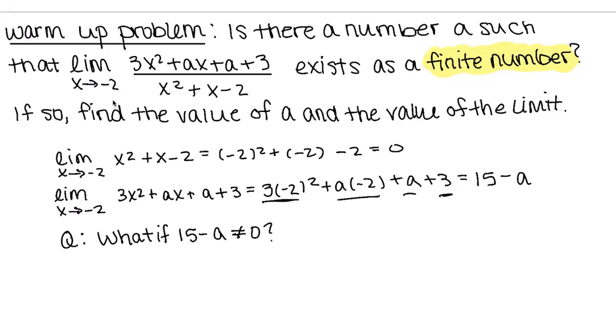Yeah, so it would not be in indeterminate form. There's a chance that if the numerator wasn't zero, we could get a limit that is like infinity, we could get negative infinity depending on the signs. There's a chance that we could even not get a limit at all - one does not exist. So what does that tell us since we want to find a finite number for this limit? What does that tell us about 15 minus a?